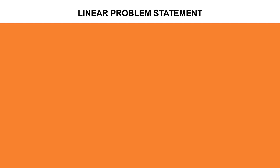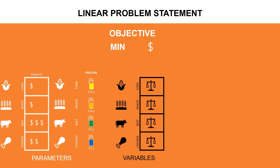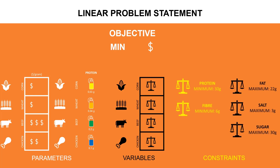It's now time to formulate the problem. Our objective function is the total cost per bar — we want to minimize it. We have two types of parameters: ingredient nutritional contribution and their cost per gram. Our decision variables are the quantity in grams per bar for each of the ingredients. Finally, we have two types of constraints: for good nutrients, we want to set a minimum quantity per bar, and for the not-so-good ones, we want to limit their quantity with a maximum cap.